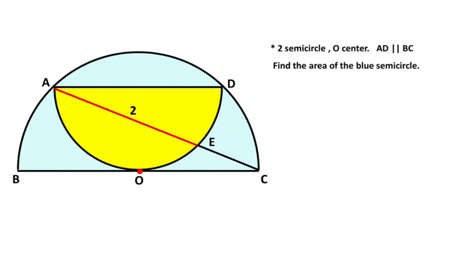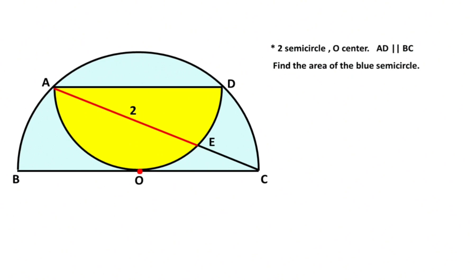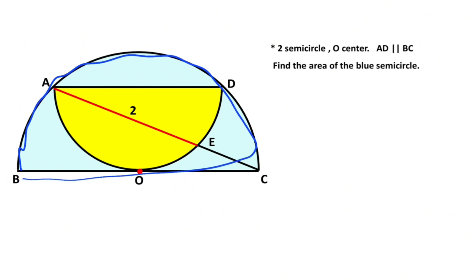Hello everyone. In this video we have two semicircles. Point O is given as the center of the blue semicircle. This length is given as three units. The lines AD and BC are given as parallel to each other. The question is: what is the area of the blue semicircle?